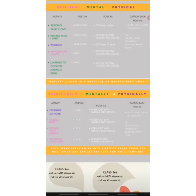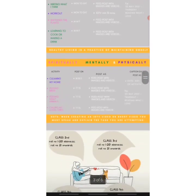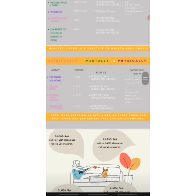These three activities — reading, writing, and workout — are to be done Monday to Saturday on a daily basis. Reading should be a minimum of five minutes. Next come the activities to be adopted on an alternative basis: watering the plants, learning to cook or make a drink, and cleaning home.